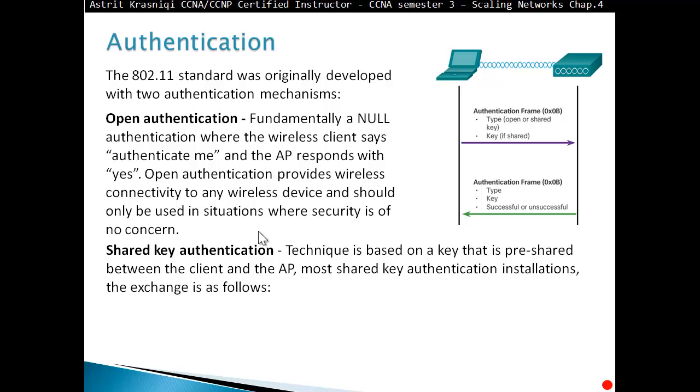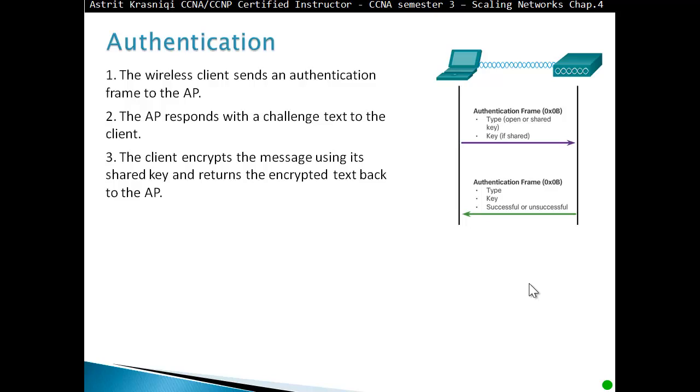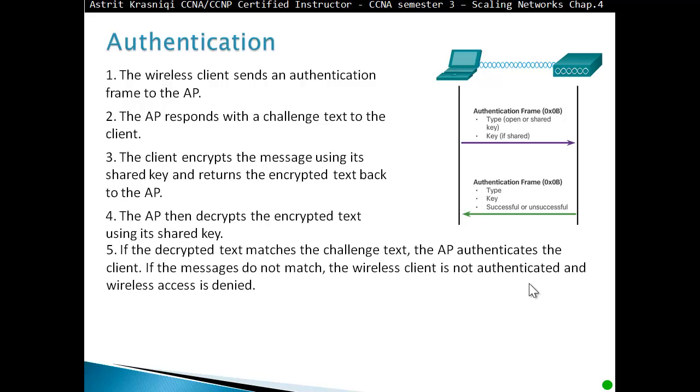Another type of authentication is enterprise authentication where you implement a server like a RADIUS server for authentication. With shared key authentication, the wireless client sends an authentication frame to the access point. The access point responds with challenge text to the client. The client encrypts the message using its shared key and returns the encrypted text back to the access point. The access point decrypts the encrypted text using the shared key. If the decrypted text matches the challenge text, the access point authenticates the client. If the message does not match, the wireless client is not authenticated and wireless access is denied.